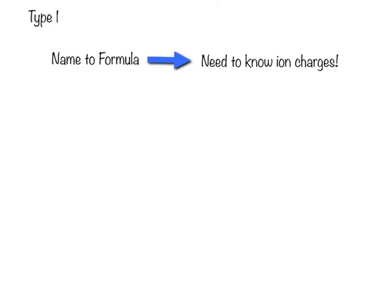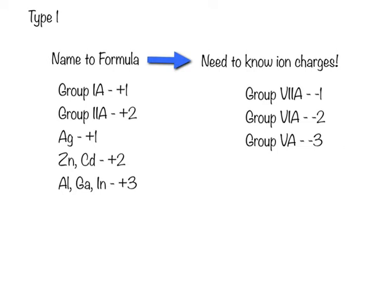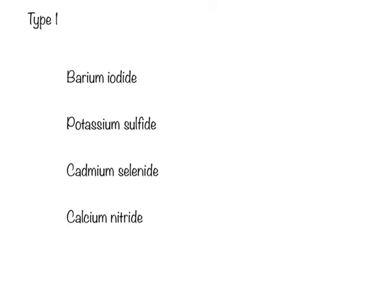If we want to go from name to formula, we need to know our ion charges. For your cations, the group 1A are plus 1, group 2A are plus 2, silver is plus 1, zinc and cadmium are plus 2, aluminum, gallium, and indium are plus 3. As well as the group 7A tend to be minus 1, group 6A tend to be minus 2, and group 5A tend to be minus 3. You need to know those charges in order to get the formulas correct.